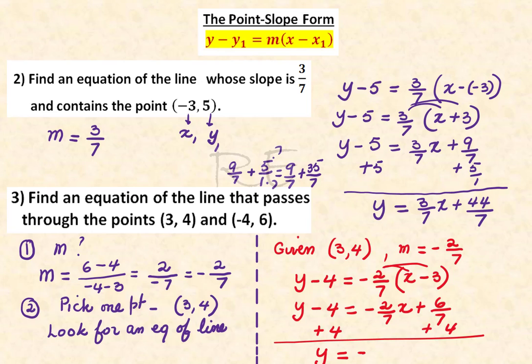And y is equal to negative 2 over 7 x plus 6 over 7 plus 4. Well, 4 over 1, when we multiply by 7 over 7, is 28 over 7. And 6 plus 28 is 34, 34 over 7.